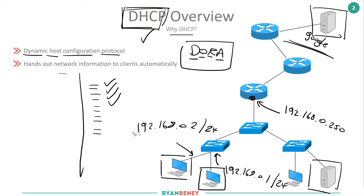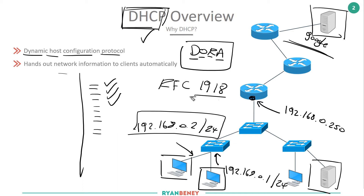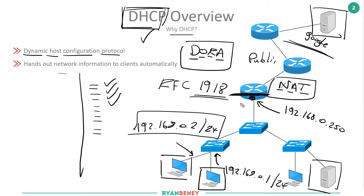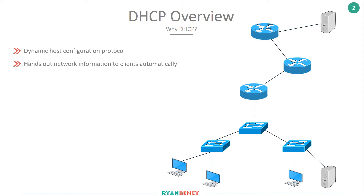DHCP normally gives you what we call RFC 1918 private addresses. As they leave the network, providing it's a public network, it will require some sort of NAT — Network Address Translation — which is another topic we'll pick up after DHCP. For now, DHCP is a protocol that allows clients on the network to dynamically obtain their IP address.